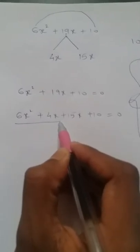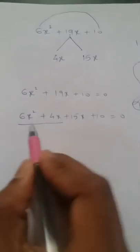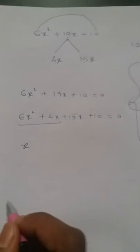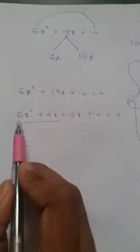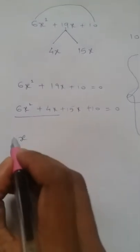Now from the first two terms take out what is common. Here x is there, here x is there, so I can take out x common. 6 will come in the 2 table, 4 also will come in the 2 table, so take out completely 2x as common.